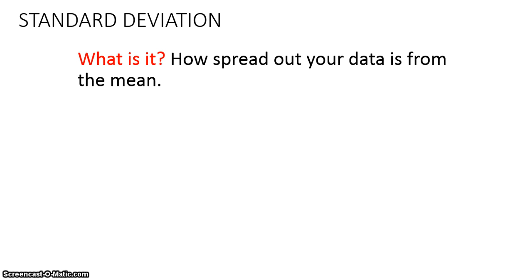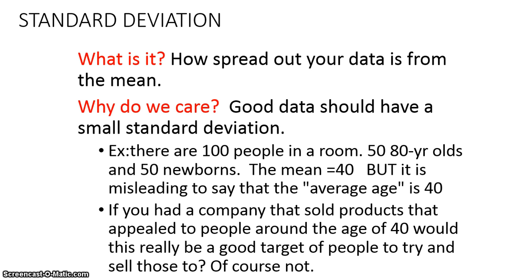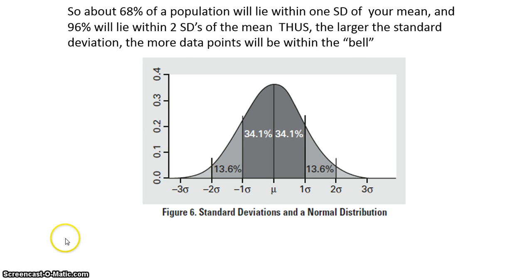What standard deviation is, is how spread out your data is from your mean or your average. The example I gave in class: you have 100 people in a room, 50 of them are 80 years old and 50 of them are 0 because they're newborns. That would mean if you took an average, you would get 40. The problem is the average age is really not 40, because there's nobody in the room that's even near 40 years old. So what we really want with our data is a nice bell curve. If we want to calculate an average, we're hoping that that means our data actually represents this average.